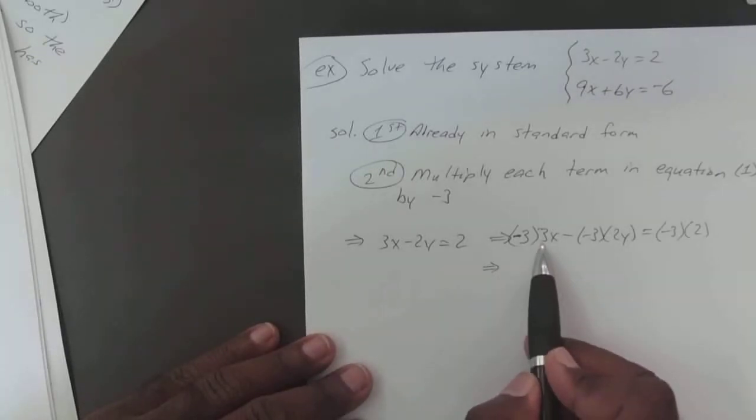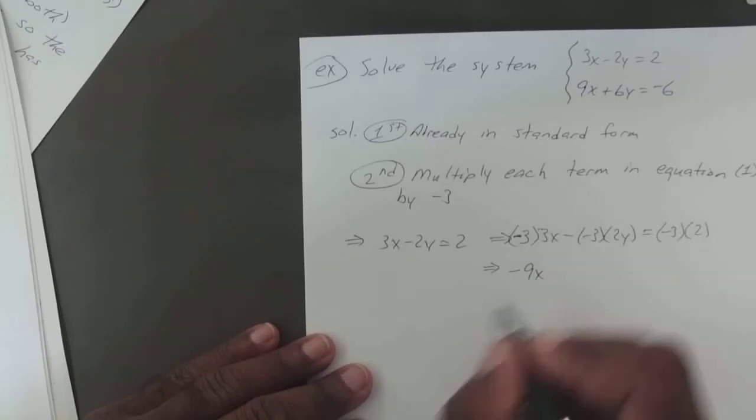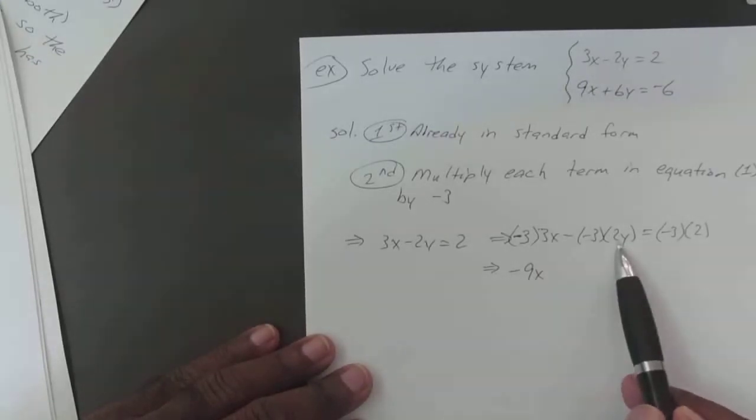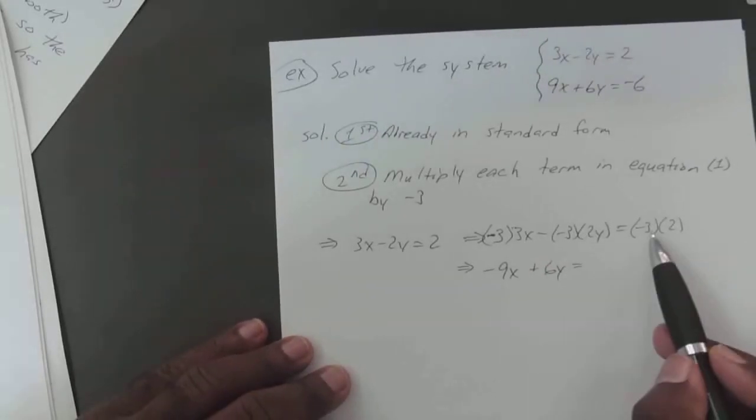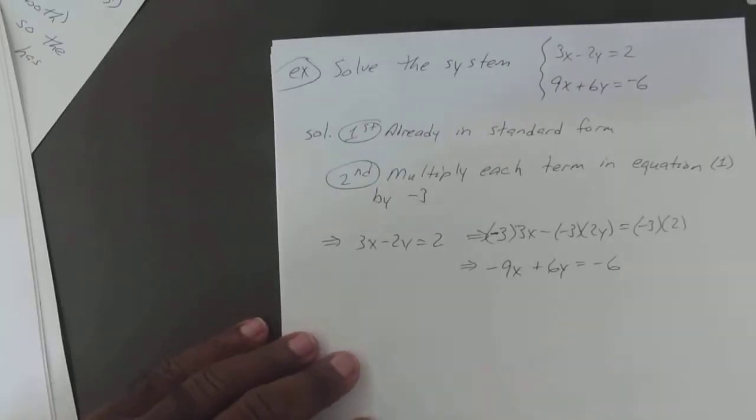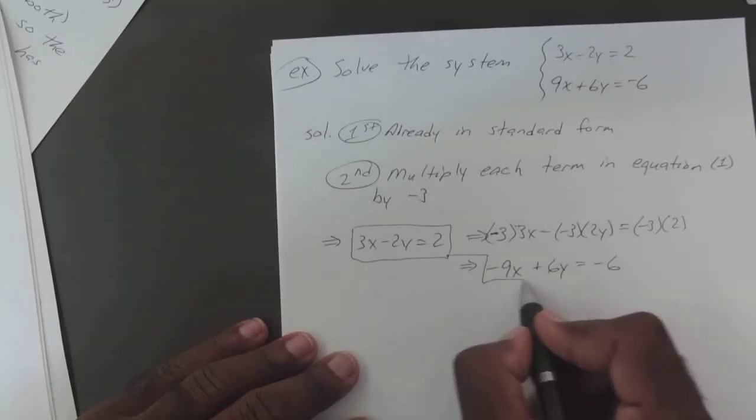Negative 3 times 3 is negative 9x. Negative times negative is positive, so you have 3 times 2y, which is positive 6y. And you have negative 3 times 2, which is negative 6. So that means this equation will be replaced with this one.